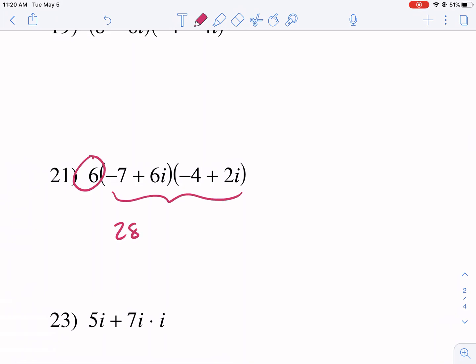So we get positive 28 minus 14i, -24i, and then positive 12i squared. Don't forget, this is all times 6. Let me just double check that. I did that pretty quickly.